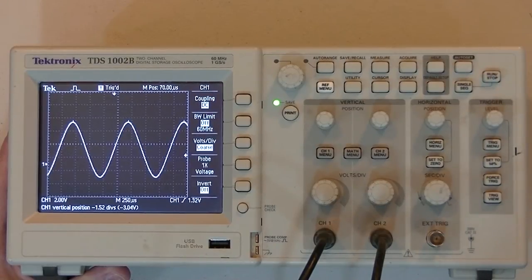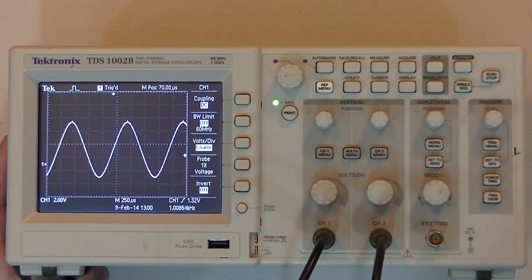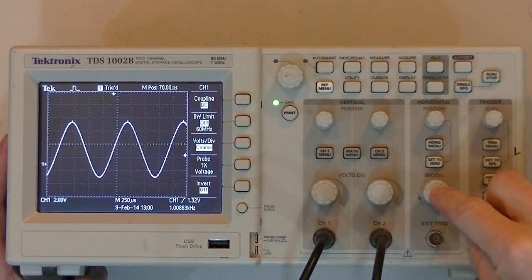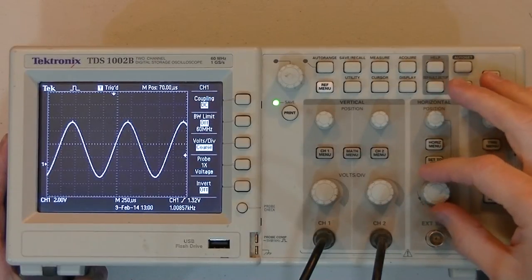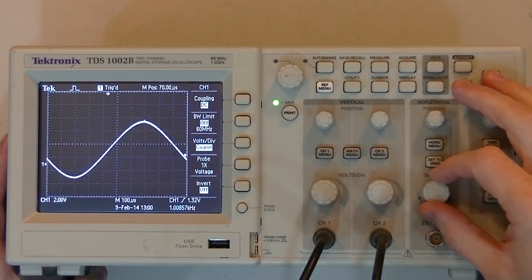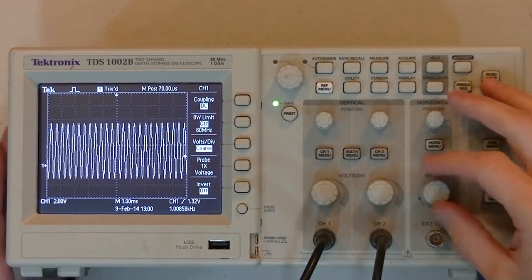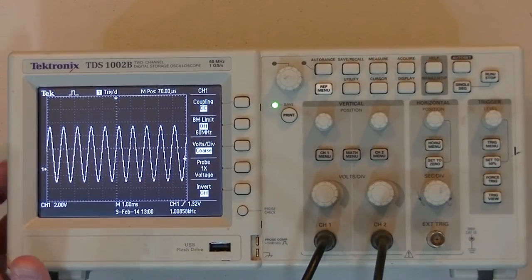That does it for this video. I'll get into the more advanced features in the next video. Next thing we're going to look at is your time per division knob. So, if I adjust this one here, it allows me to zoom in and out horizontally, or essentially look at smaller and larger amounts of time.